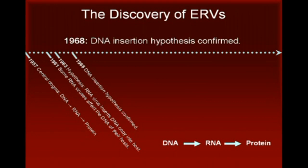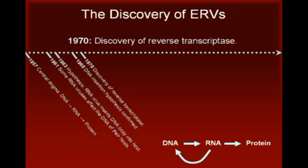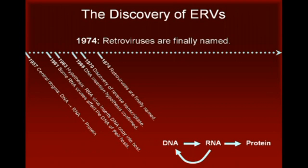Then, in 1968, it was experimentally demonstrated that some DNA viruses were capable of becoming integrated into their host DNA. However, the notion of a DNA copy of an RNA virus being passed from parent to offspring was still regarded as bizarre. The resolution finally came in 1970, when reverse transcriptase — the enzyme that makes DNA copies of RNA — was discovered, confirming the earlier hypothesis. RNA viruses really could make DNA copies of themselves and become integrated into their host's genome. In 1974, the retrovirus finally gained its name, and the existence of endogenous retroviruses soon became a widely acknowledged scientific fact.